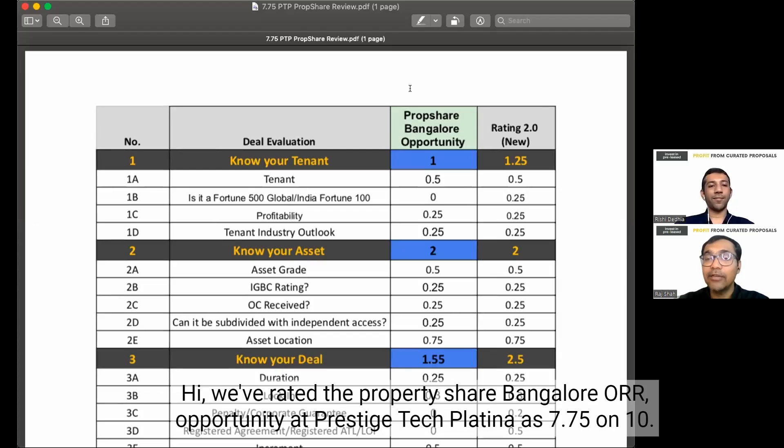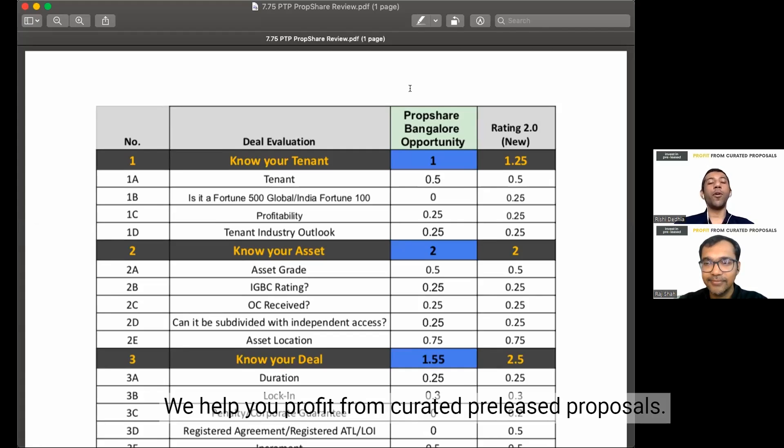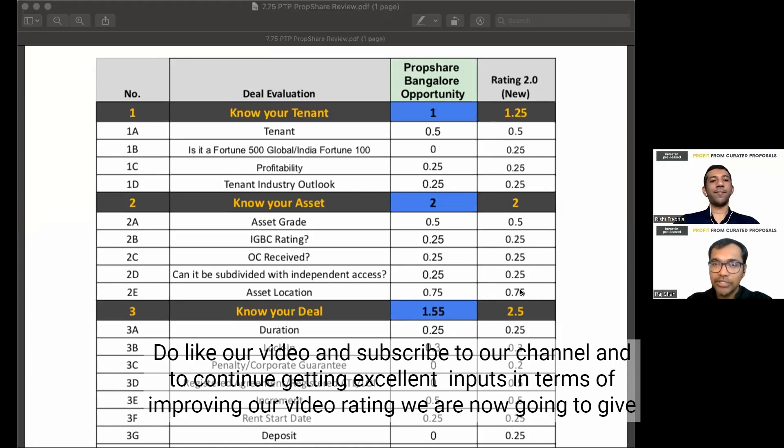Hi, we've rated the property share Bangalore ORR opportunity at Prestige Tech Platina as 7.75 on 10. This is Raj Shah and Rishit Adia. We are from Invest in Prelease. We help you profit from curated prelease proposals.